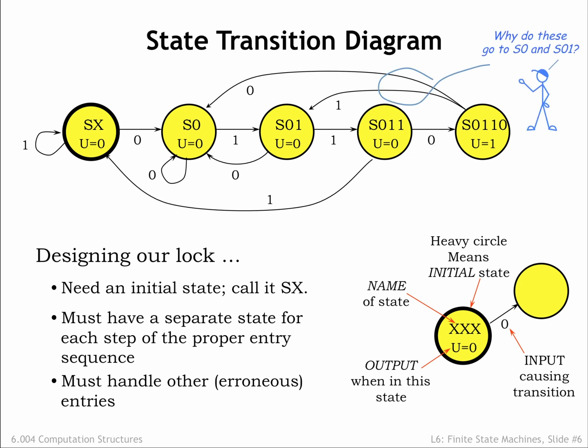For example, if the FSM is in state S0110, the last 4 input bits have been 0110. If the next input is a 1, then the last 4 inputs are now 1101, which won't lead to an open lock. But the last 2 bits might be the first 2 bits of a valid combination sequence, so the FSM transitions to S01, indicating that a sequence of 01 has been entered over the last 2 bits.